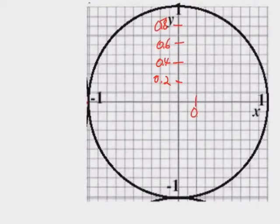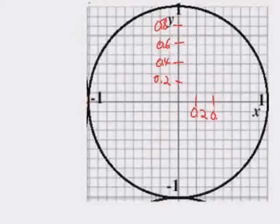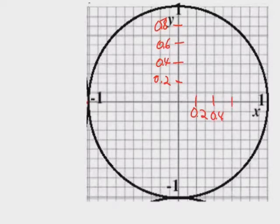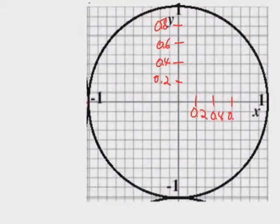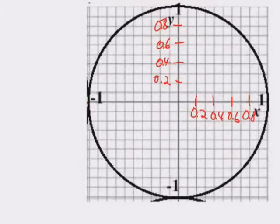We're looking at this unit circle — you'll get familiar with it. I call it a unit circle because it's a circle centered on the origin on grid paper. It only goes up to 1 to the right, 1 up, negative 1 to the left, and negative 1 down. It's a handy way to picture your sines and cosines.